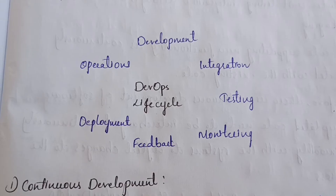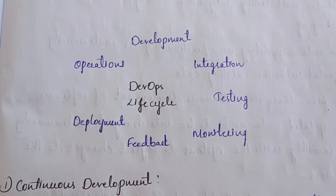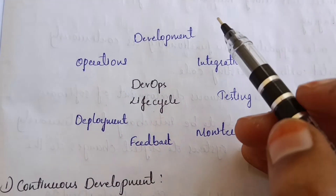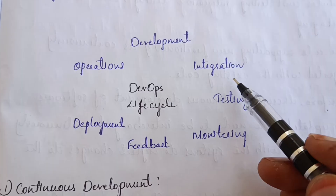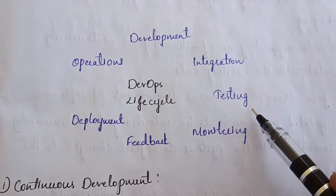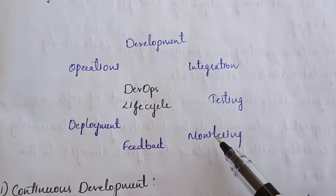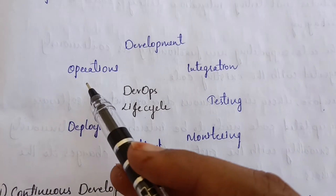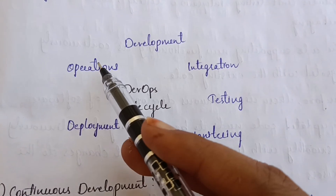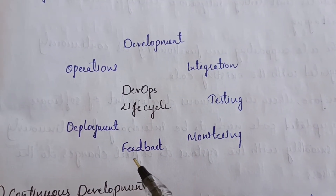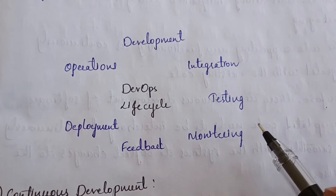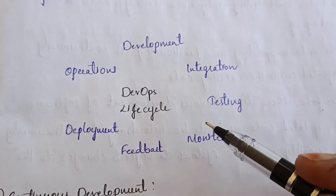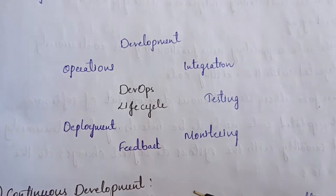There are a total of seven steps in the DevOps lifecycle: first, development; integration; testing; monitoring; feedback; deployment; and operations. All these are done in a continuous way. Let us now discuss all of these briefly, one by one.